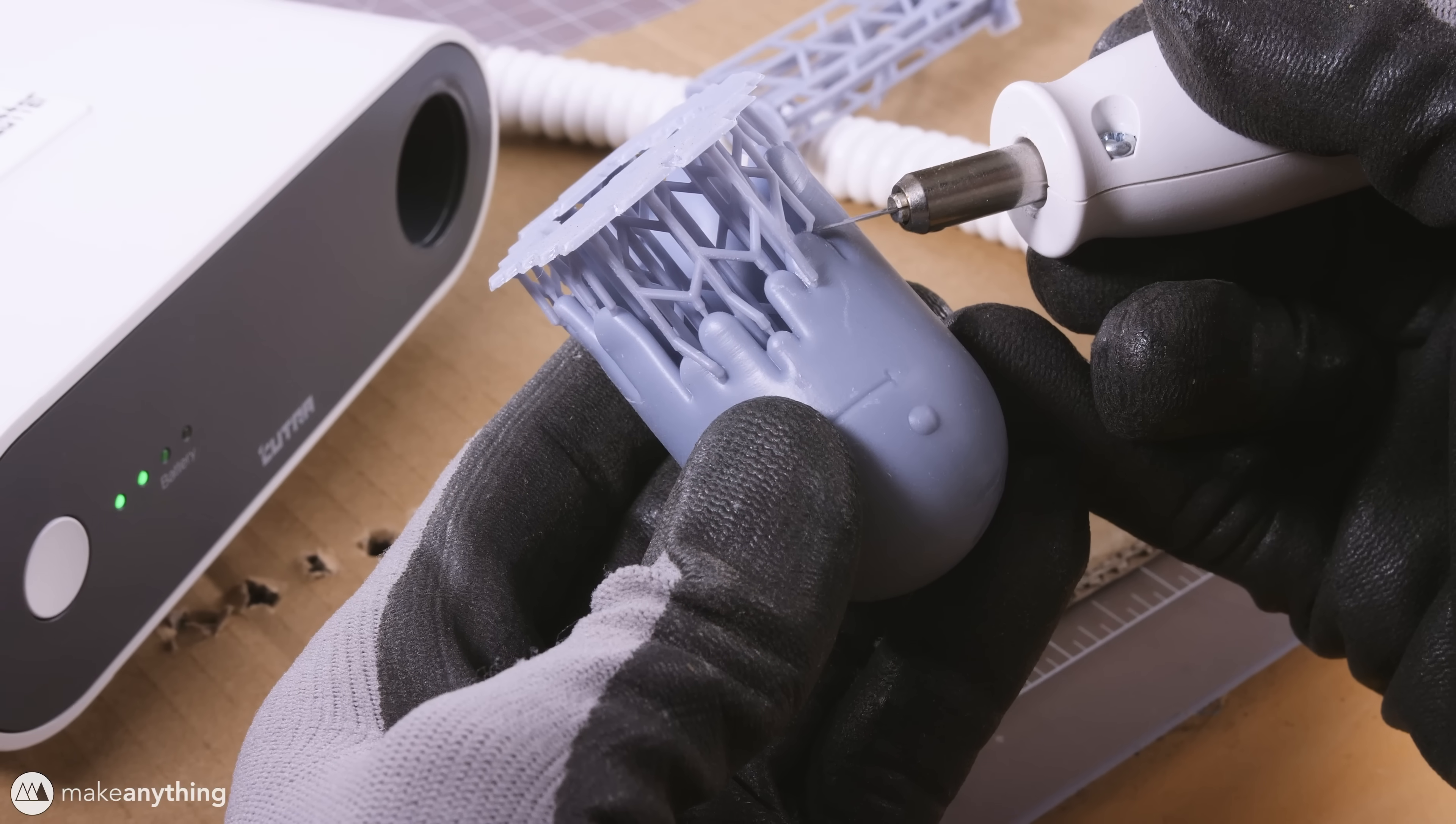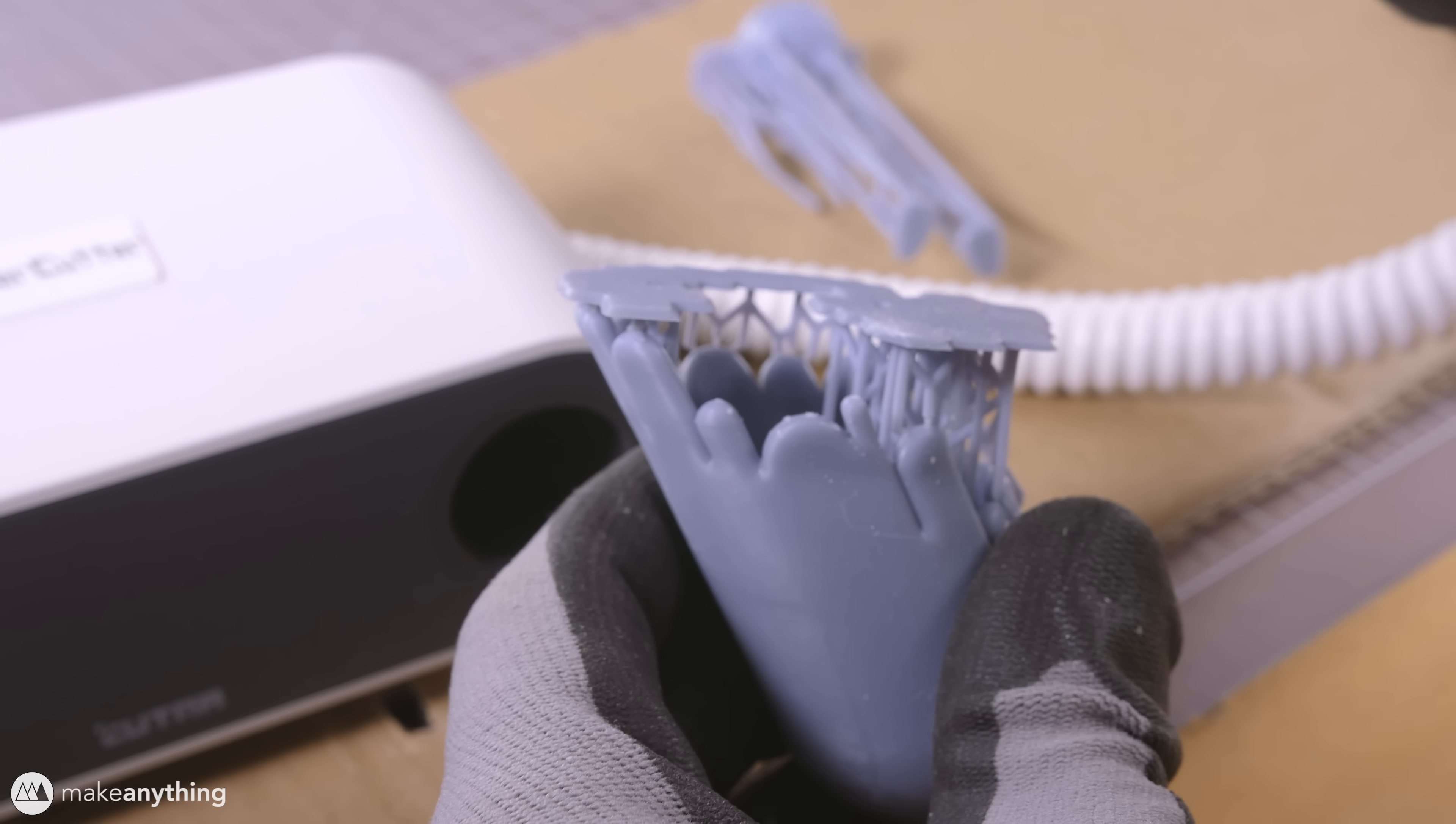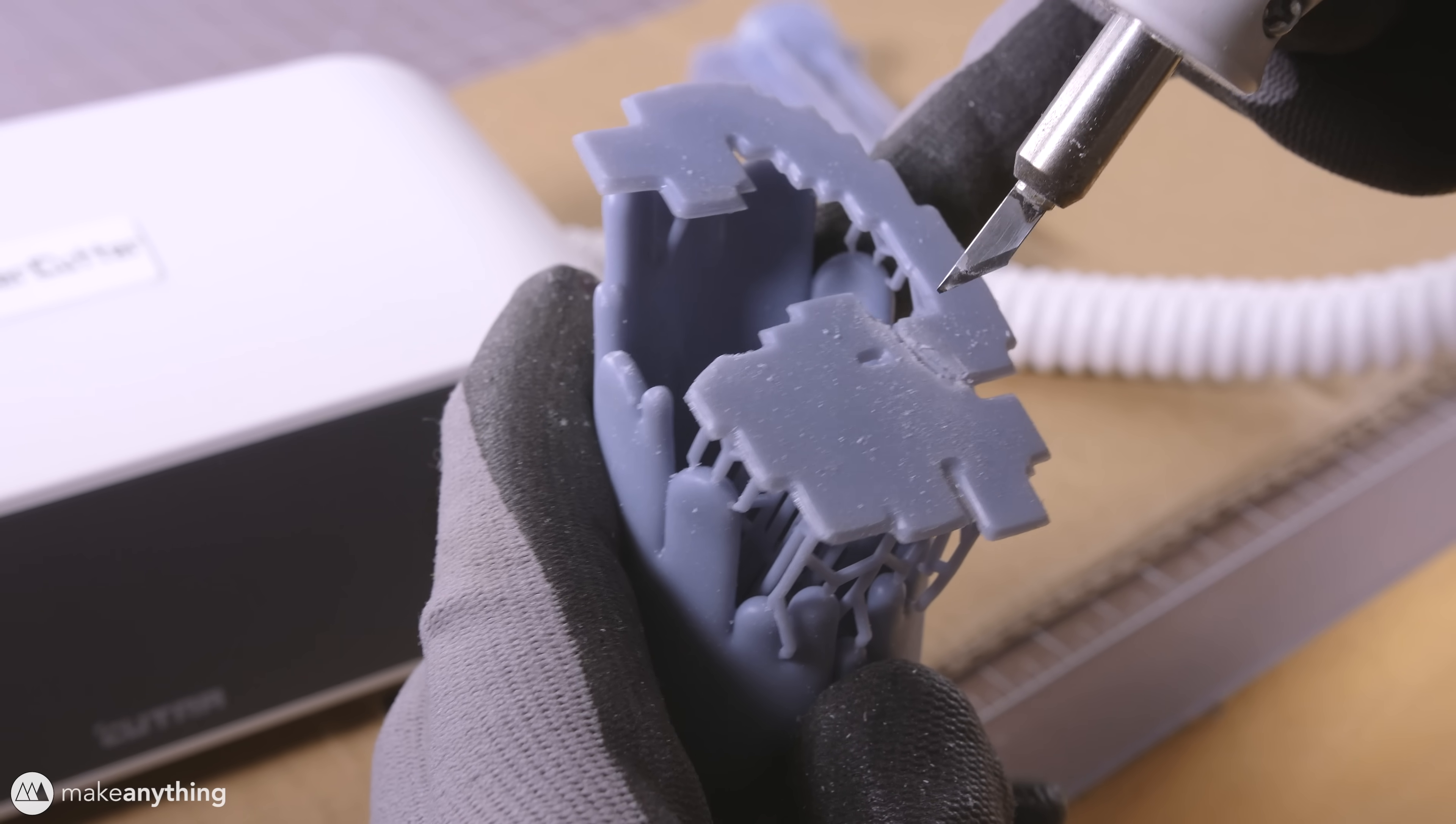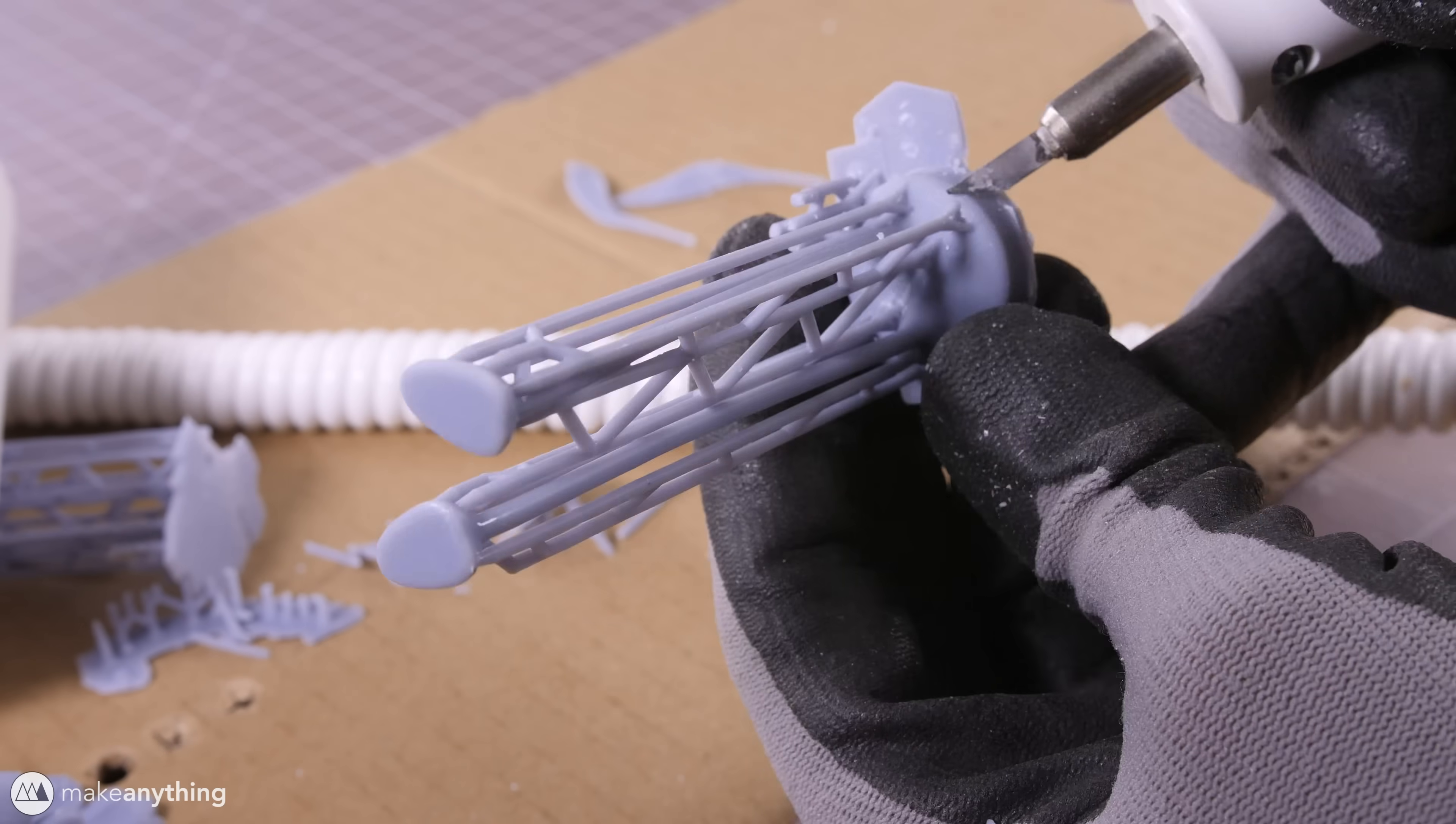So I fired up my wonder cutter and started delicately cutting away all of this support material. These tree supports generated by our slicer come off quite easily so you can see our ultrasonic knife kicking off quite a bit of resin dust so you want to be wearing a respirator.